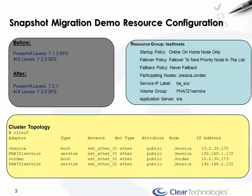Let me show a quick overview of my demo cluster. It's a two-node hot standby cluster config with a single service IP address and volume group, starting with PowerHA 7.1.3 with Service Pack 5 and AIX level 7.2 SP2. After the upgrade, only my HA level changes because I will not be updating AIX in this demonstration, so we'll end up with the GA level of 7.2 SP2.1.